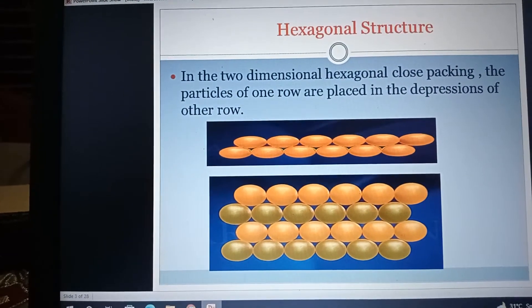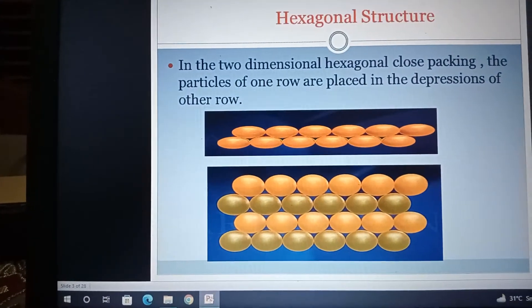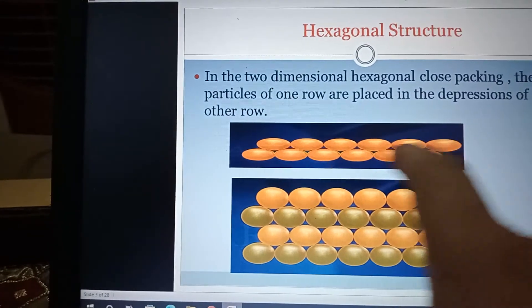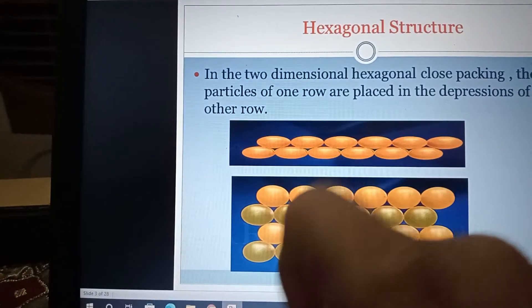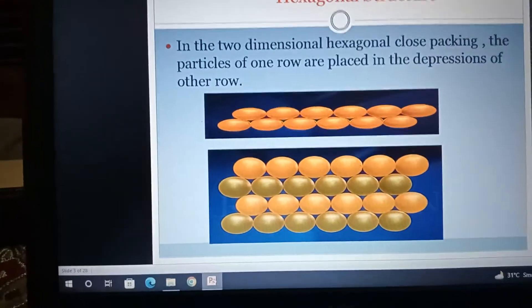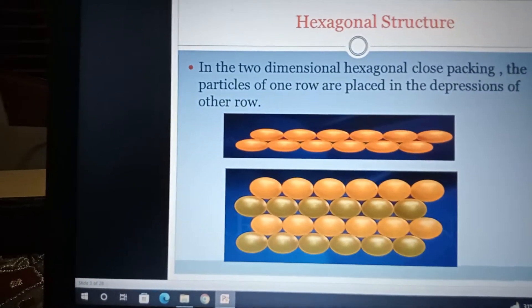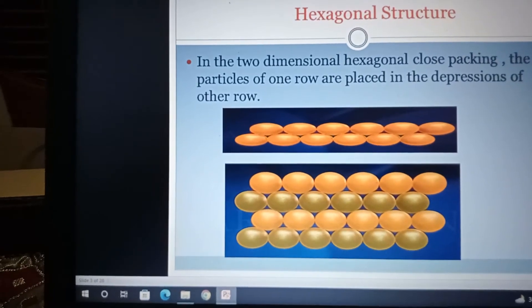In two dimensions, hexagonal close packing, the particles of one row are placed in the depression of the other row. You can see that the particles of one row are placed in the depression of the other row. It is very useful to know that hexagonal structure, how it becomes and how it is formed.